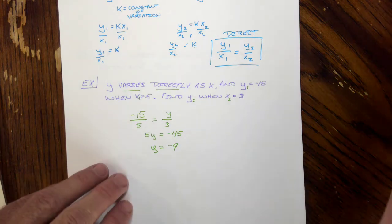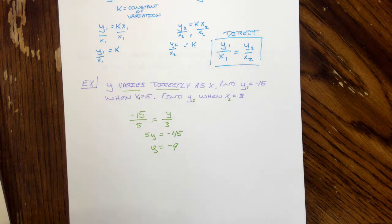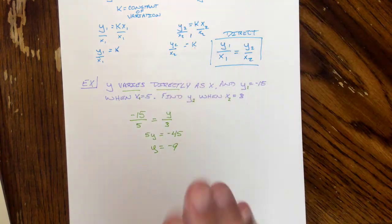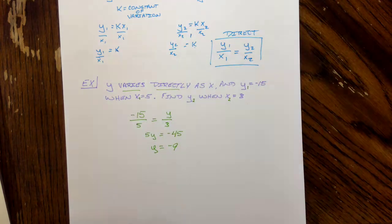Based on this direct variation, Y is going to equal a negative 9. Then we move on to our next type of variation. Direct variation, one's going up, the other one's going up. They vary directly with each other.